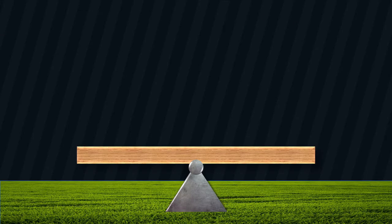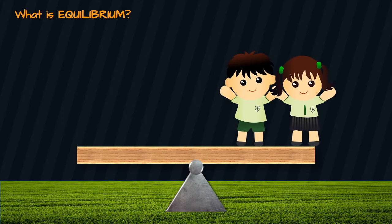Let us start by asking ourselves, what is equilibrium? Imagine a seesaw. Focus on the plank alone. Anna and Anton want to ride the seesaw together on the same side, but wanted the plank to be parallel with the horizon. What will happen if they ride on the same side?